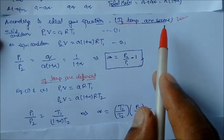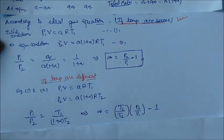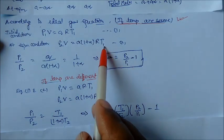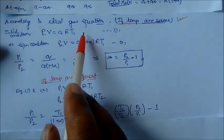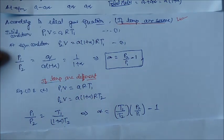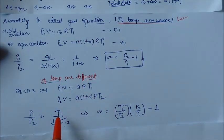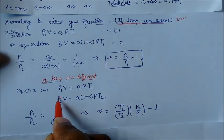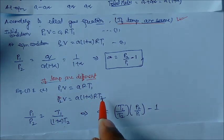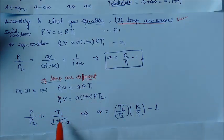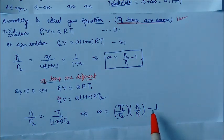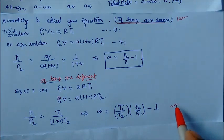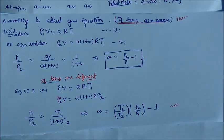Suppose temperature is different — initial T₁ and equilibrium T₂. Then: P₁V = A·R·T₁ and P₂V = A·(1 + alpha)·R·T₂. So P₁/P₂ = T₁ / ((1 + alpha)·T₂), giving alpha = (T₁/T₂)·(P₂/P₁) minus 1. Keeping all these formulas in mind, we can solve problems. After this, we will see some solved examples.